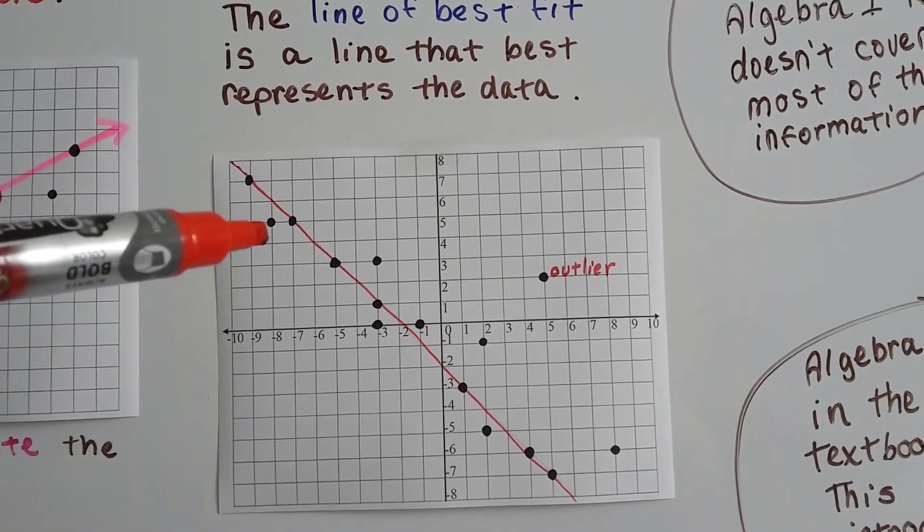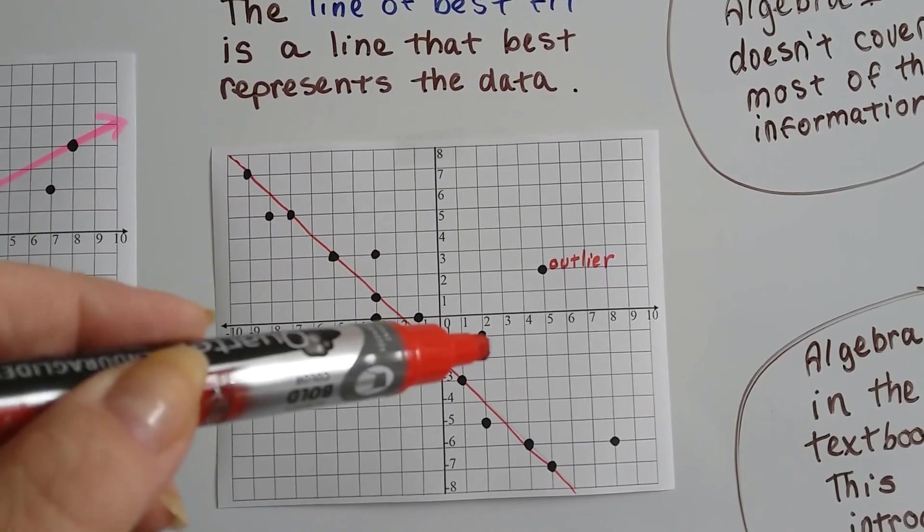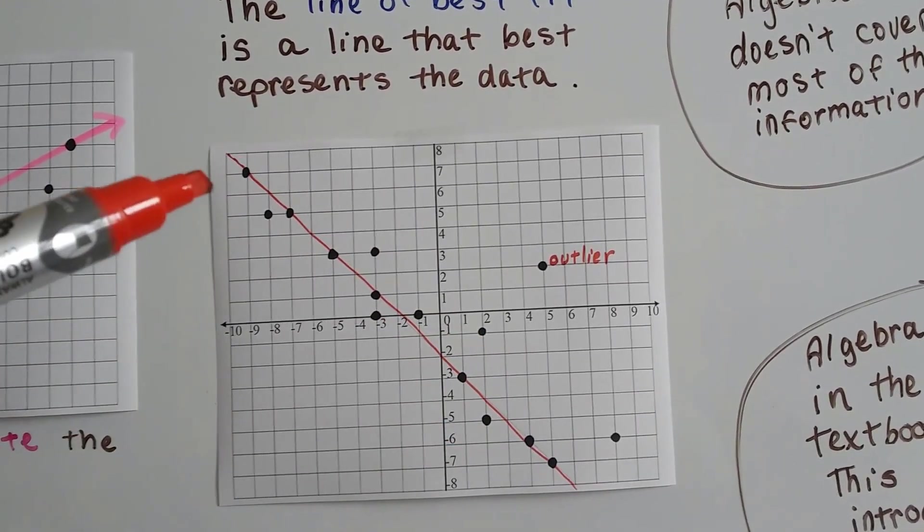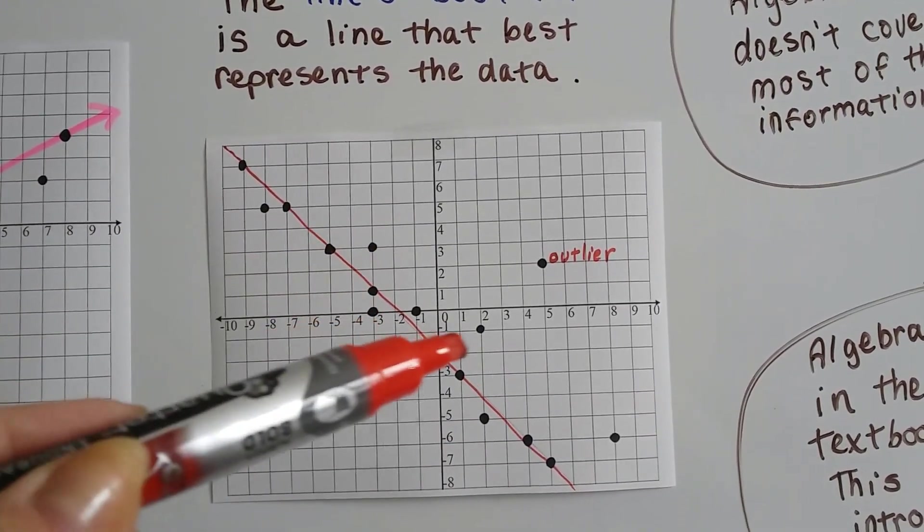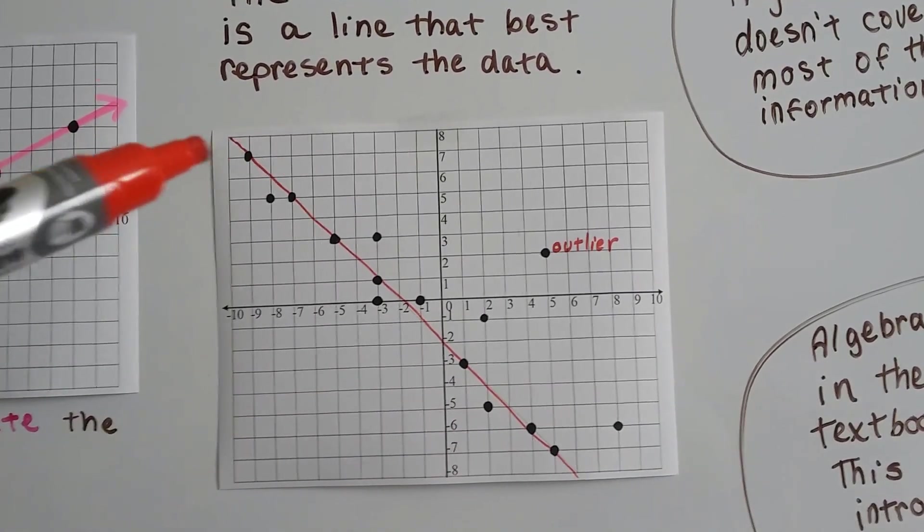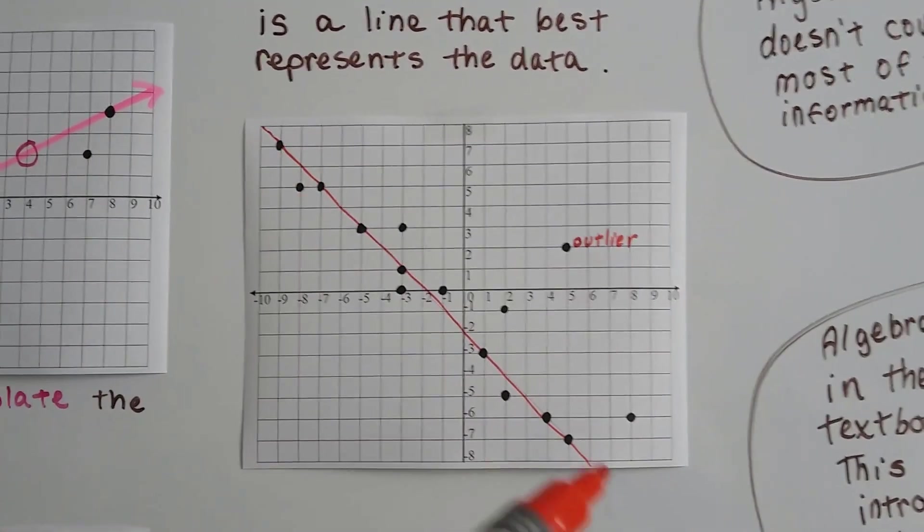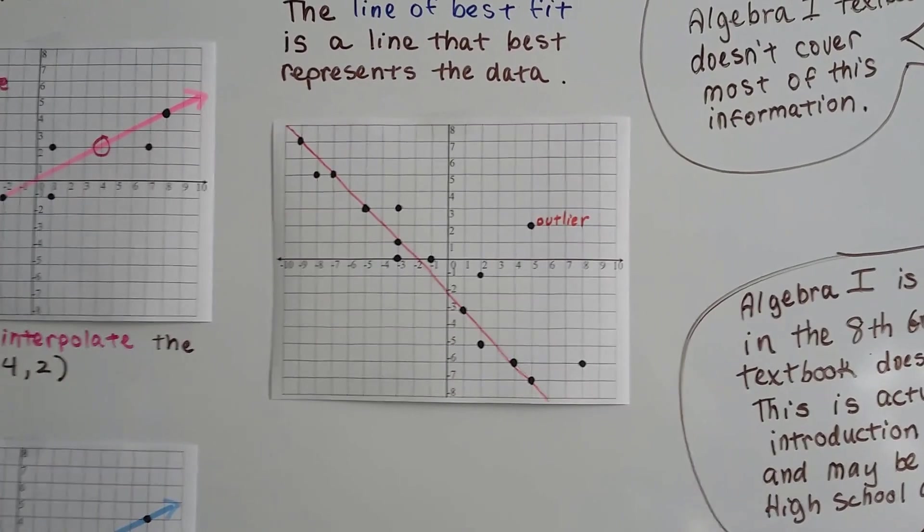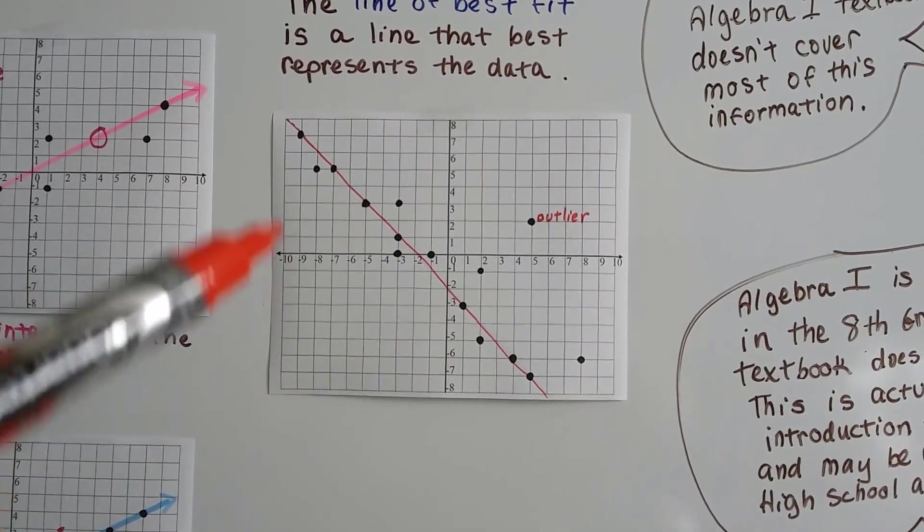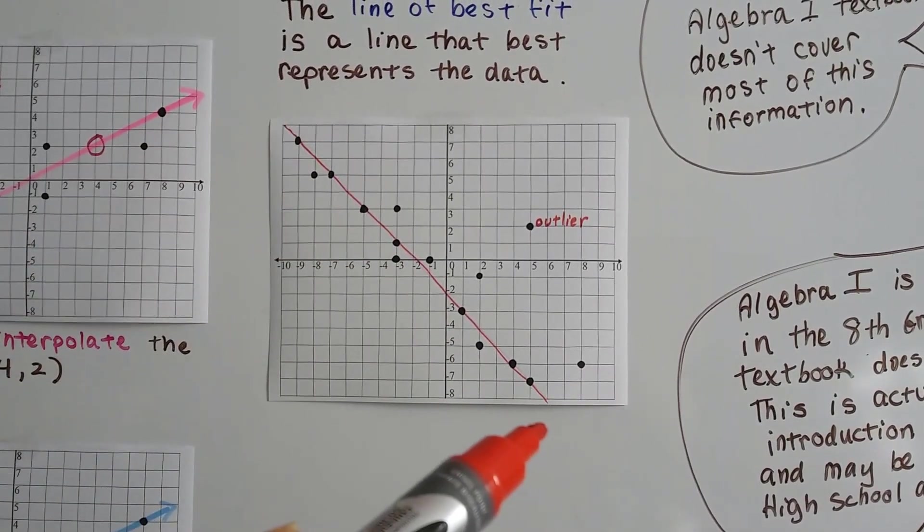You can see we've got points that are above and below the line. We try to draw the line so that we've got about as many above it as we do below it. And if you squinted at this and there was no line there at all, just the points, you'd kind of be able to see that there is a line kind of going downhill.